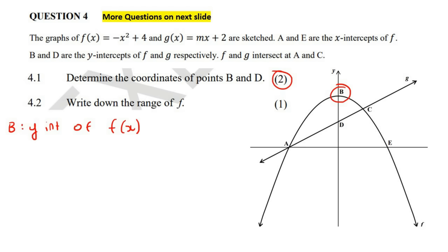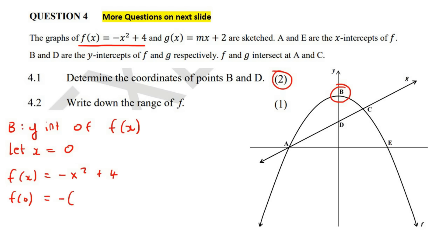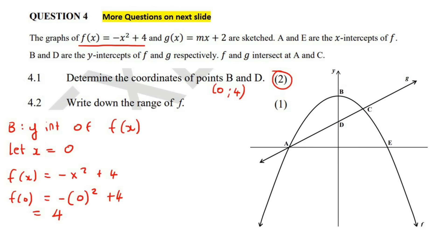How do you find a Y-intercept? You let X equal to zero. So we take the graph of F and we let X equal to zero. If you do that, you're going to get four. So B's coordinates — don't just say four — you're going to say X is zero and Y is four.